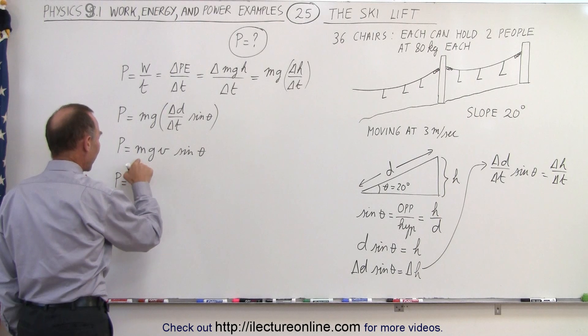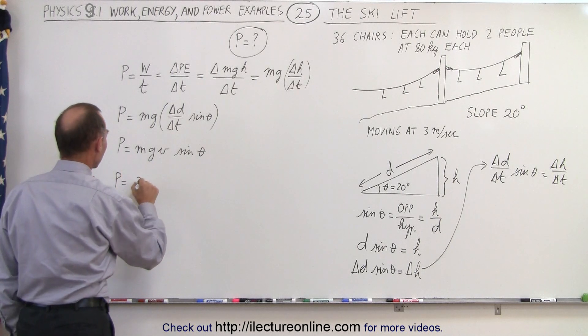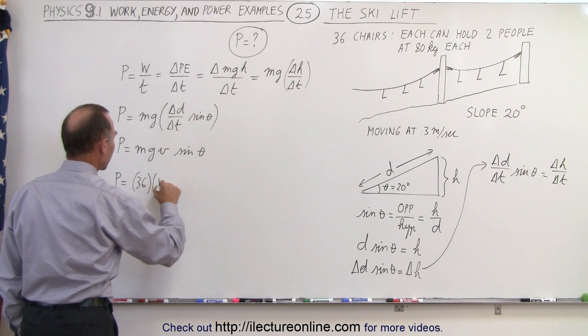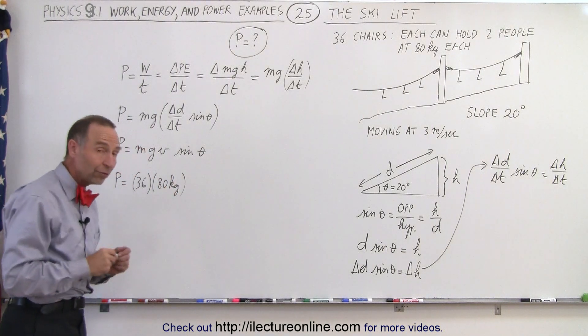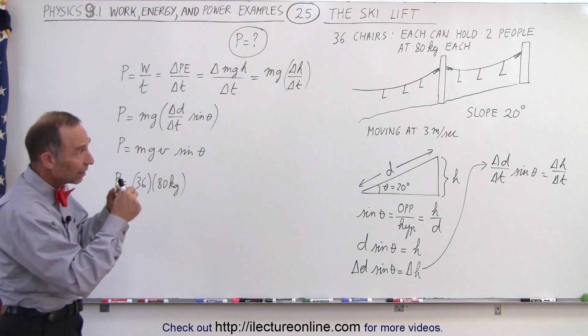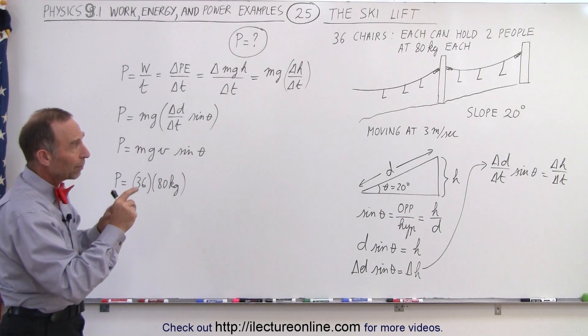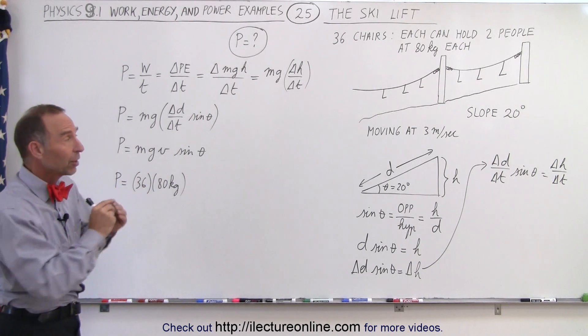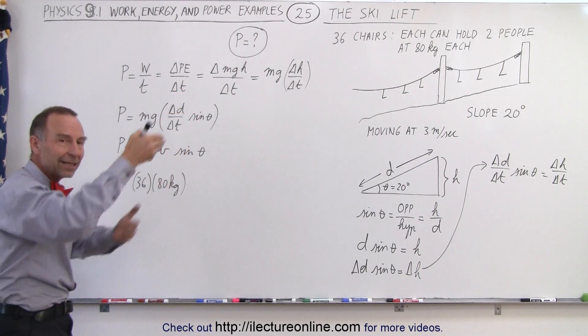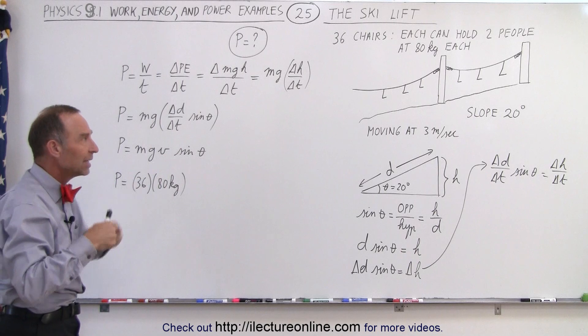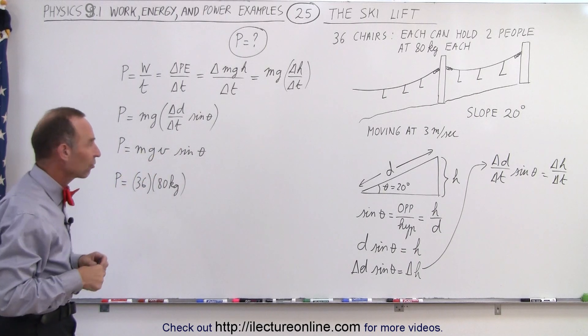So the power is equal to the mass—that would be 36 times 80 kilograms for the total mass of all the skiers. Now we don't need to take into account the weight of the chairs themselves, because as chairs are going up, we have chairs coming down on the other side, so that the masses of the chairs kind of equal one another and therefore cancel each other out.